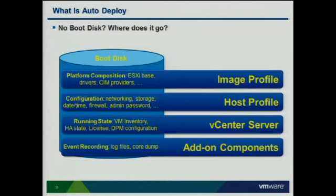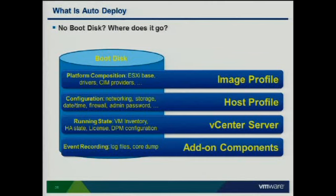Since the disk goes away, where does information go? The image profile is built and maintained by ESXi Image Builder and uploaded onto the auto-deploy server. All host configuration information - vSwitches, port groups, settings, multipathing - gets stored in host profiles. Auto-deploy is tightly coupled with host profiles for host configuration. All state is stored in vCenter. For log files and core dumps that normally go on disk, you can set those up to log to other data stores. ESXi 5.0 introduces a new syslog collector and dump collector to facilitate working with auto-deploy.